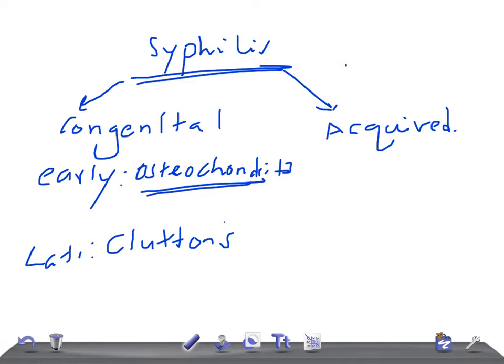In acquired syphilis, the joints may be affected in the secondary or tertiary stage. The joints are affected more commonly in secondary and tertiary. In primary, you have only lesions like chancre. In secondary and tertiary, the joints are affected.